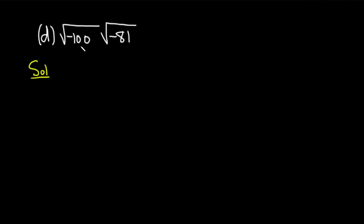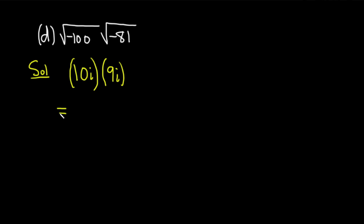The first step is to simplify each: the square root of negative 100 is 10i, and the square root of negative 81 is 9i. Then 10i times 9i: 10 times 9 is 90, and i times i is i squared. i squared equals negative 1, so this equals 90 times negative 1, which is negative 90.